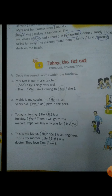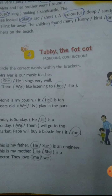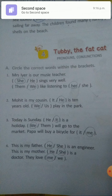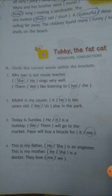So here, first exercise A: you have to circle the correct words within the brackets. First one: Mrs. Iyer is our music teacher — she sings very well. Mrs. Iyer is a lady, so circle she. We like listening to her — her means the music teacher, we means us. In the first sentence circle she, second one we, then her. Second one: Mohit is my cousin — he is 10 years old. We play in the park — circle he and we.